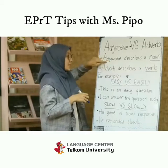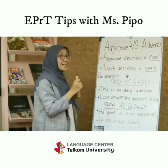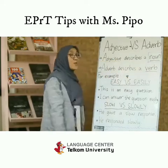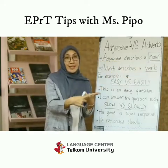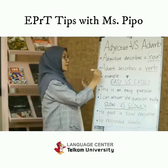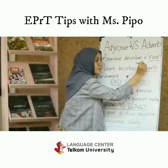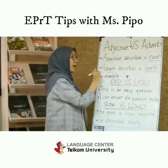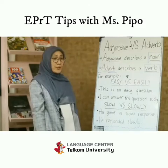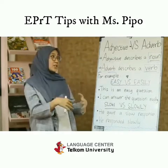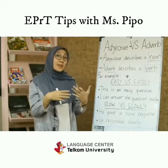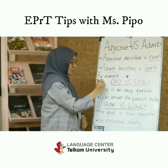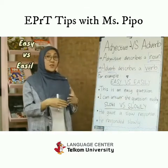Adjective describes a noun — a noun can be a person, a place, or a thing. While adverb describes a verb. Remember, adverb has the word 'verb' at the end of the word. So that's the difference: adjective describes a noun (a place, a person, or a thing), while adverb describes a verb.